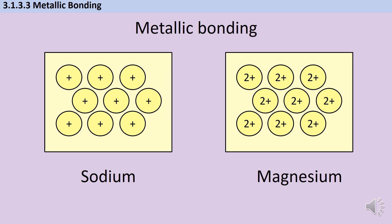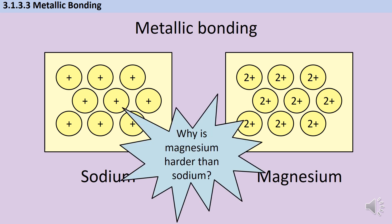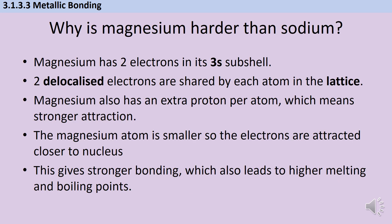So we could think about this in terms of an exam question, like why is magnesium harder than sodium? At A-level chemistry, you always want to be really specific about where the electrons are — not just saying this atom has an electron in a higher energy orbital, but actually giving numbers and giving subshells. So magnesium has 2 electrons in its 3s subshell — that's its final subshell where its valence electrons are. Because it's got 2 electrons in its 3s subshell, there are going to be 2 delocalised electrons per atom shared in this lattice.